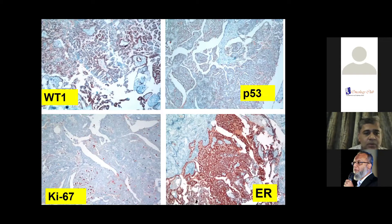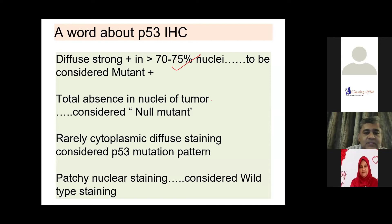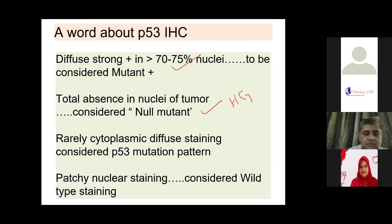WT1 is positive in low-grade serous cancer also. A word about P53 immunohistochemistry: when do you call it mutant positive or abnormal positive? When you have diffuse strong positivity in 70 to 75% of the nuclei — only then should it be called P53 positive. Sometimes you have complete absence of P53 in the nuclei of tumor cells — that's called null mutation — which also occurs in high-grade serous cancer. When it is patchy nuclear staining, it is considered wild-type, and that is seen in low-grade serous carcinomas.